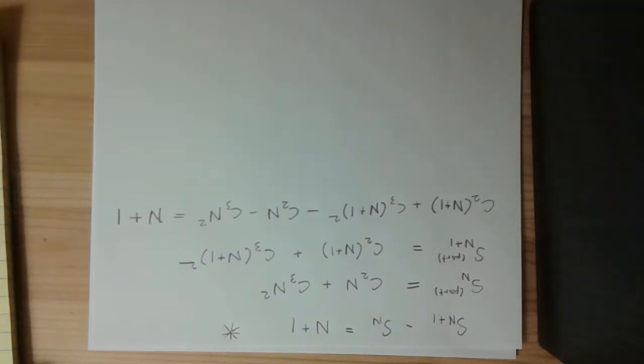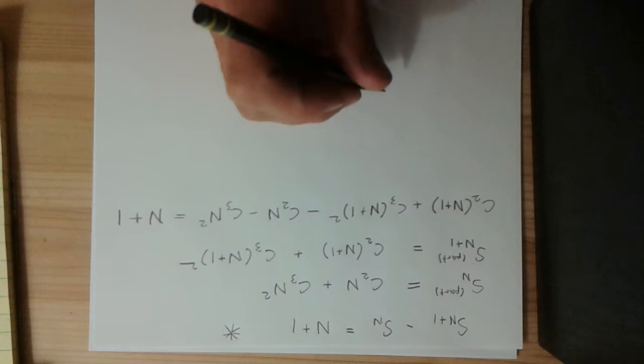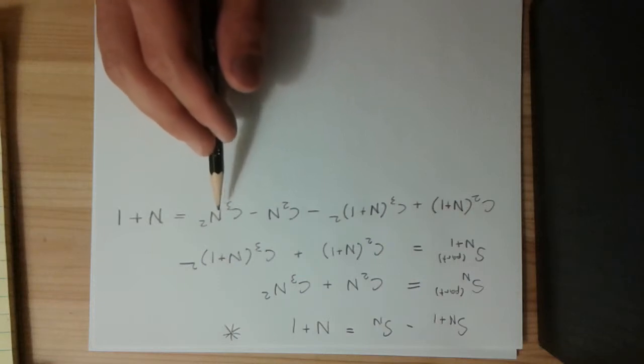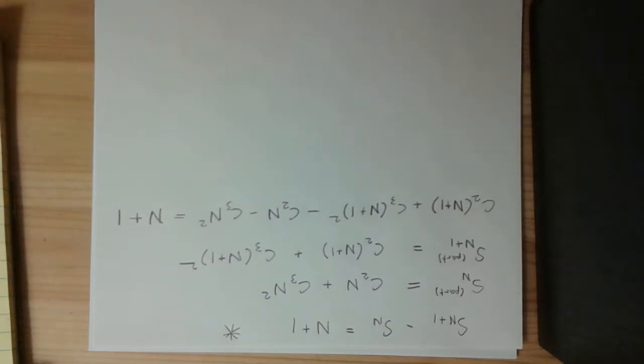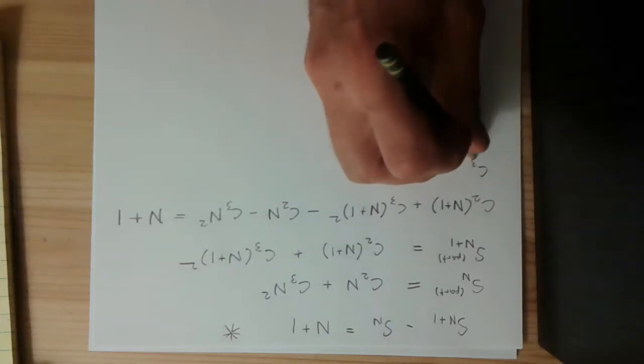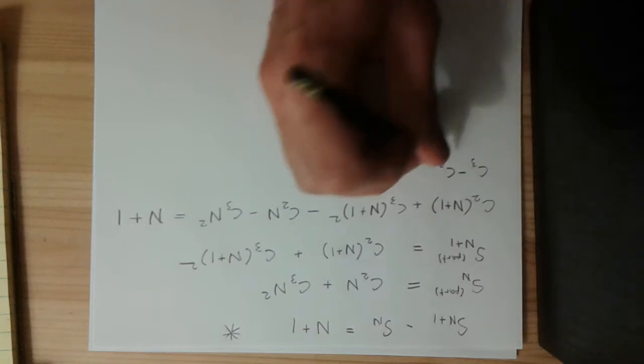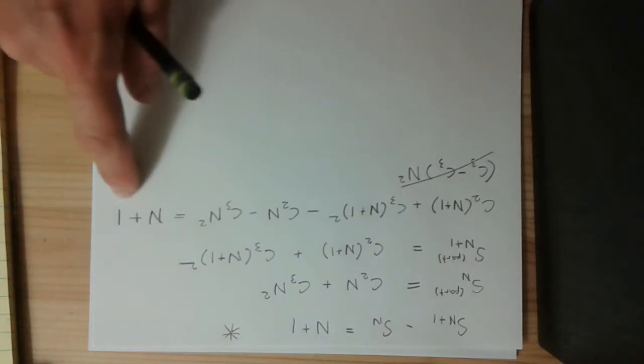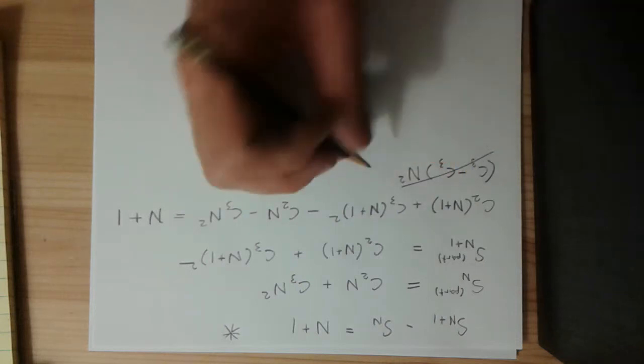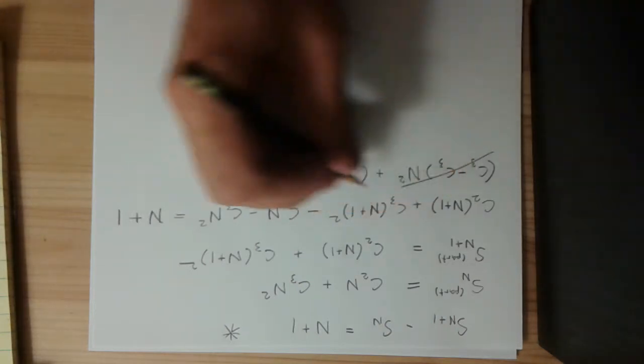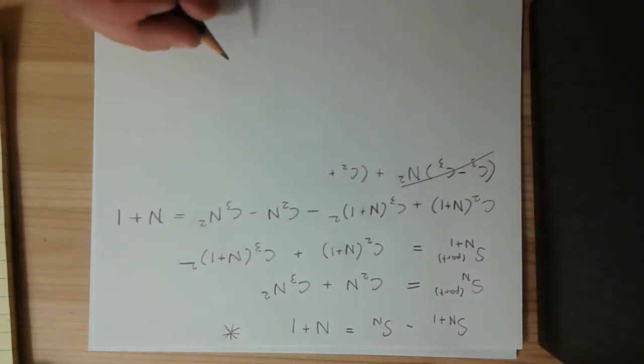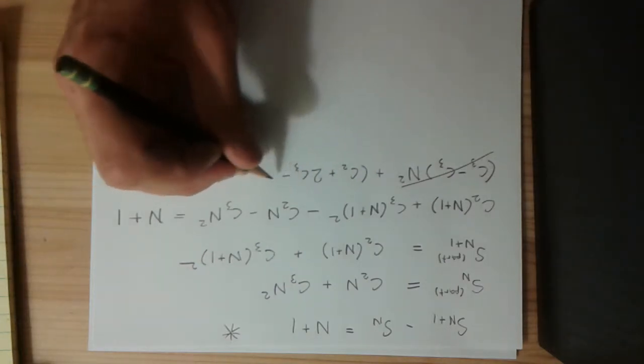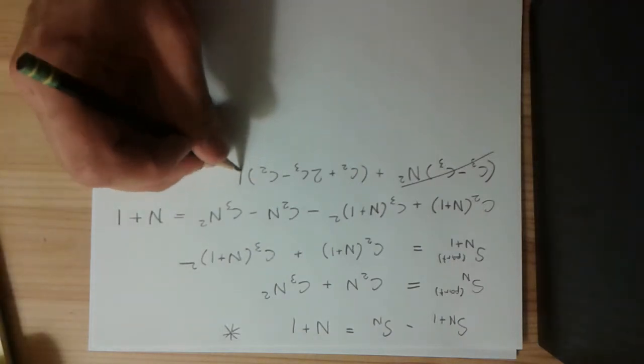Alright. So, I think the easiest way to do this is just to group the terms according to what they are, whether they are constant, n, or n squared. So, first let's look at the n squared. Looks like we're going to have C3 and a minus C3 times n squared. So, obviously this is just 0. That's good, because we don't have an n squared over here. Now, how about n's? Well, we're going to have, here we have a C2. Here we're going to have 2C3 once this thing is expanded. And, let's see, over here we have a minus C2. Looks like that's it. These are the n terms.